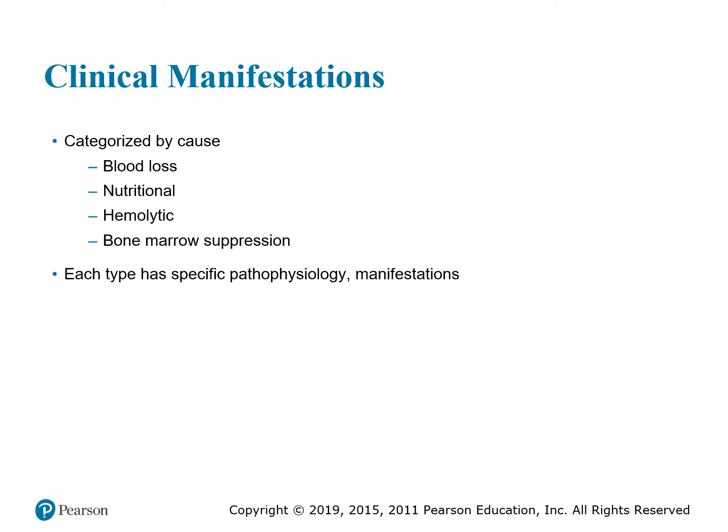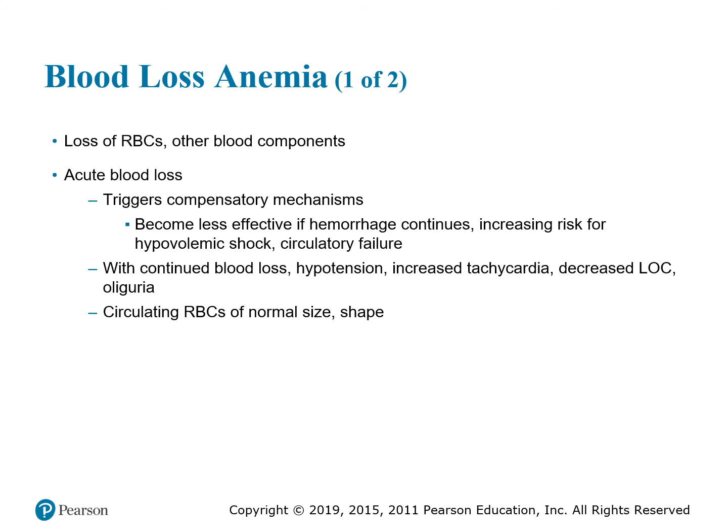Under clinical manifestations, anemia is categorized by blood loss, nutritional deficiency, hemolytic problems, circulation issues, or bone marrow suppression. Some patients taking certain chemotherapy drugs can experience bone marrow suppression, as can drugs used for arthritis and eczema. Each type has specific pathophysiology and manifestations. With blood loss, you have loss of RBCs and other blood components. Blood is fluid — it has platelets and plasma. Acute blood loss triggers the body to increase heart rate to pump remaining blood to vital organs.